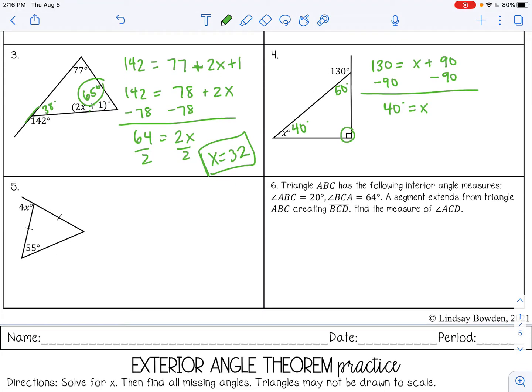And then number five, we have an isosceles triangle here, which means these base angles are going to be the same. So 4x equals 55 plus 55. Add those together, and then divide by 4. And then 4 times 27.5, that would be 110, and this would be 70. I got this angle by just taking 180 minus 110 because these are supplementary. They form a line. They're a linear pair.